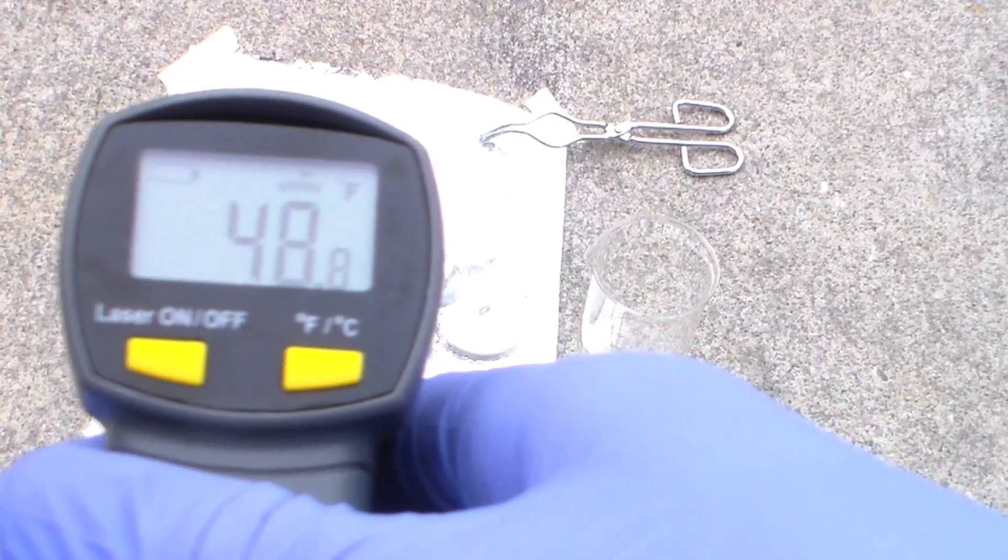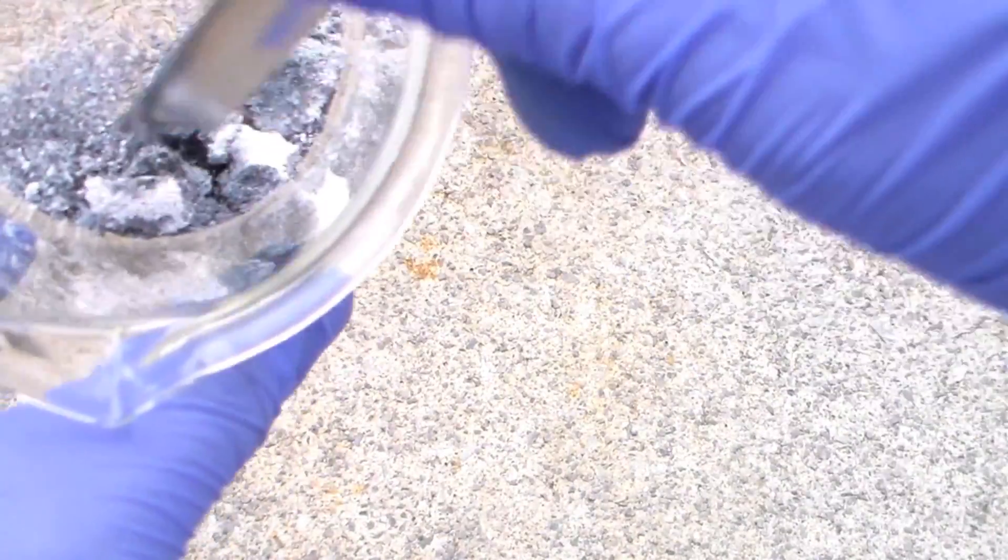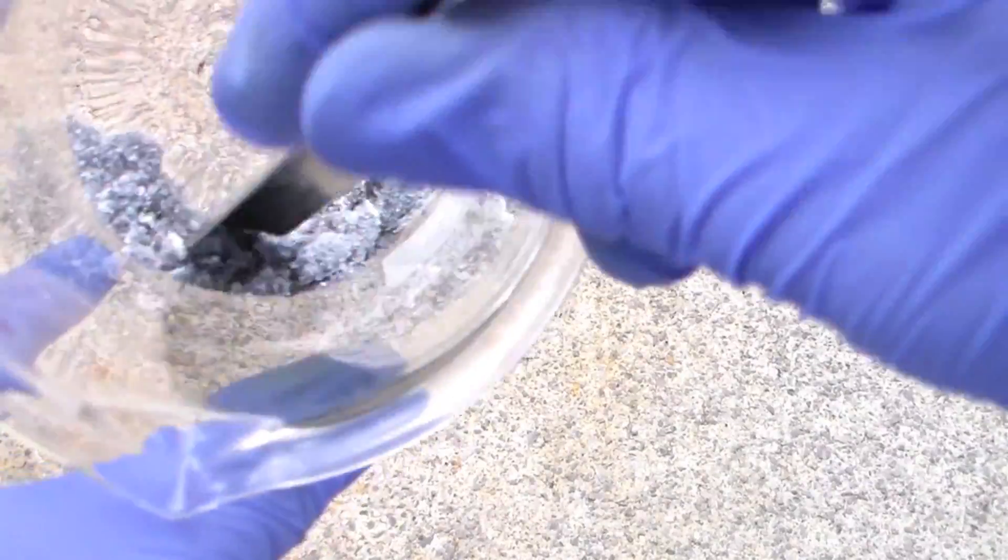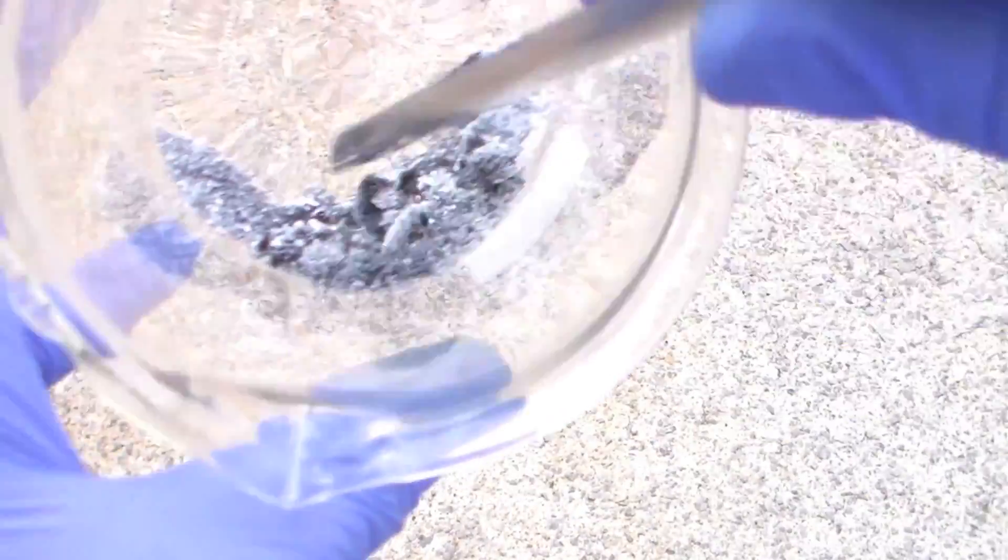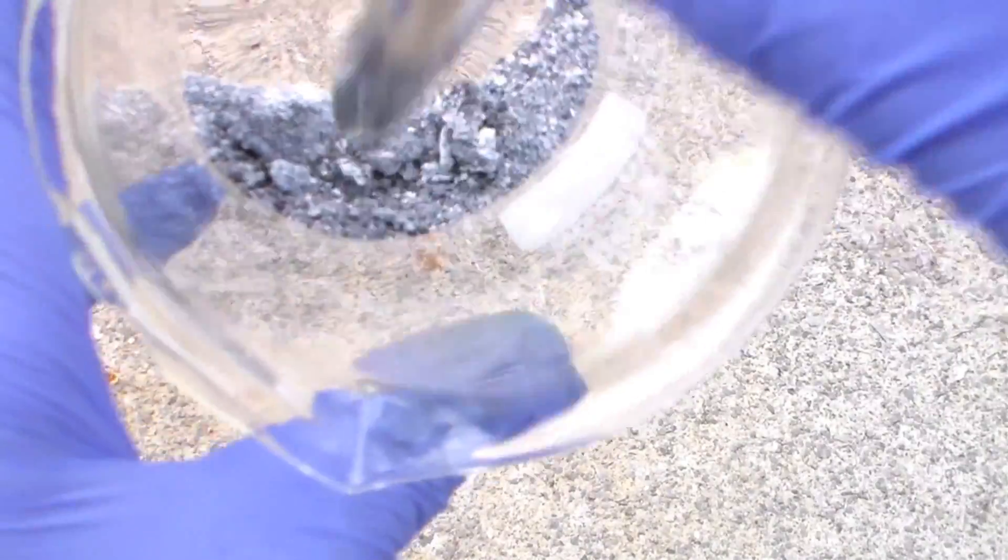Once the products were cool enough to touch, I took the main clump and added it to a beaker and crushed it up. So at this point, we have a mixture of unreacted magnesium and silicon dioxide, as well as the products of the main reaction and side reaction, which are magnesium oxide, magnesium silicide, and hopefully some silicon.